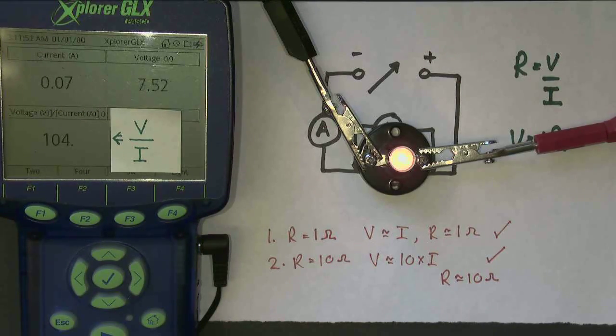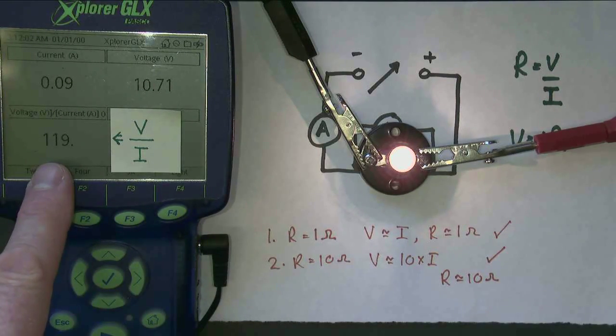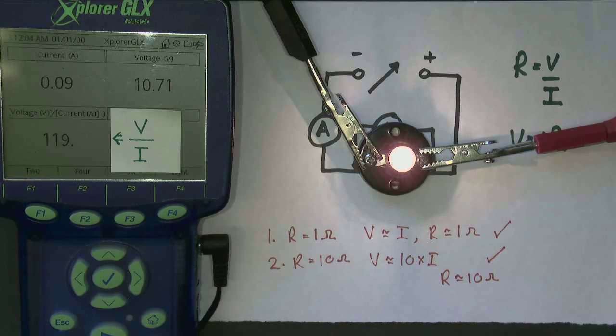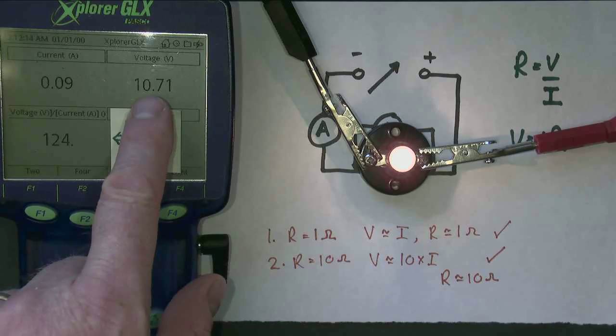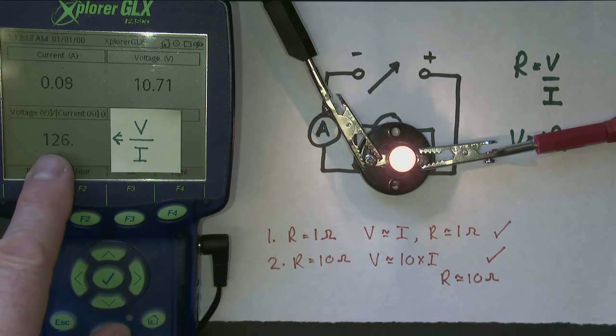And in actual fact, in a light bulb, the resistance isn't fixed. V over I is not constant. In actual fact, V over I depends on how hot the filament is. The hotter it gets, the higher the resistance value. So that's a demonstration that it's not necessarily the case that V over I, resistance, remains constant. However, it is the case that this voltage here is always equal to that current multiplied by that resistance.